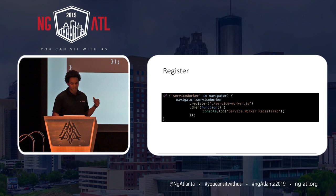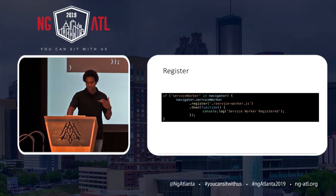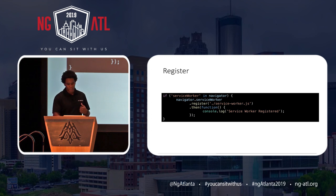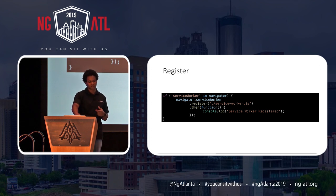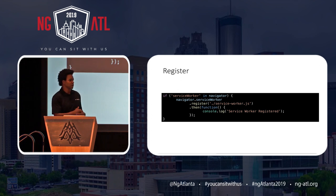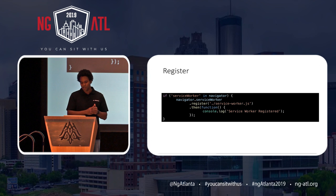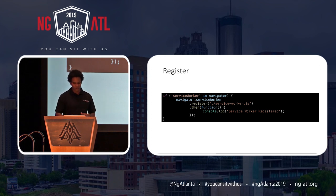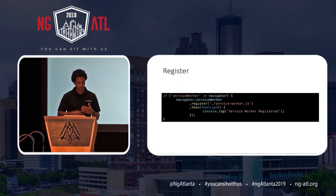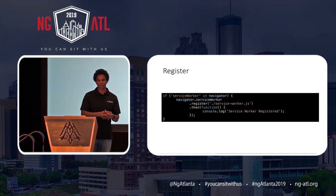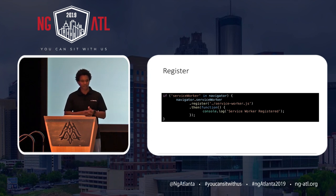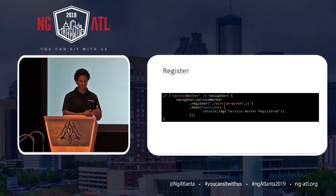You check to see if the service worker is available and register it in the browser. This registration code is not in the service worker file — it's in the main application JavaScript file. The next step after registration is the install event. After you register your service worker in the browser, the install event is triggered, and once this happens you can use the service worker to do all the management we've talked about.